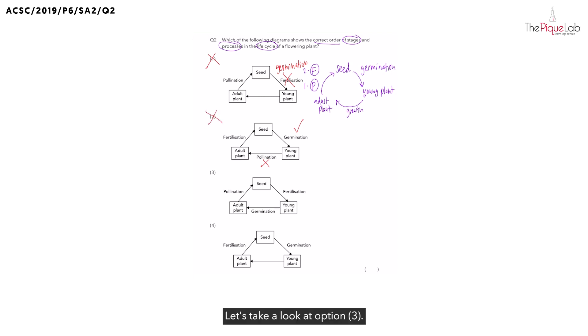Let's take a look at option 3. Do the seeds go through fertilization to become the young plant? Again, this is not the right process. It should be germination. So, option 3 is also out.